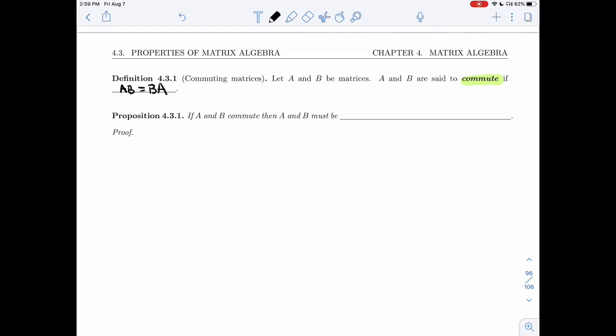And now, if A and B commute, then A and B must be square matrices of the same size. Alright, so let's prove that.